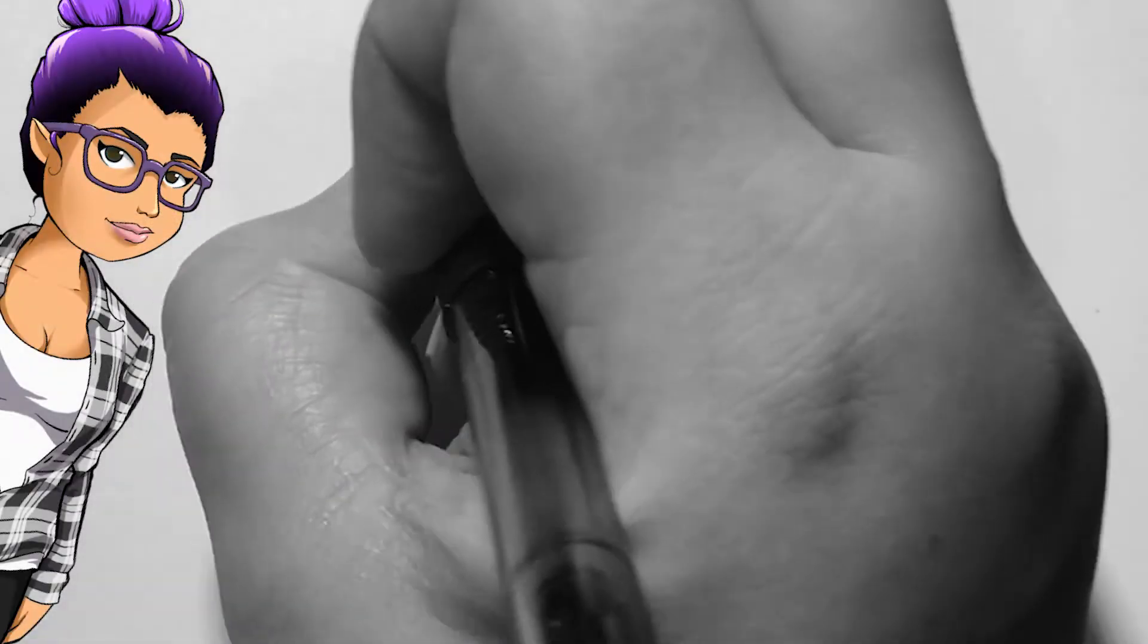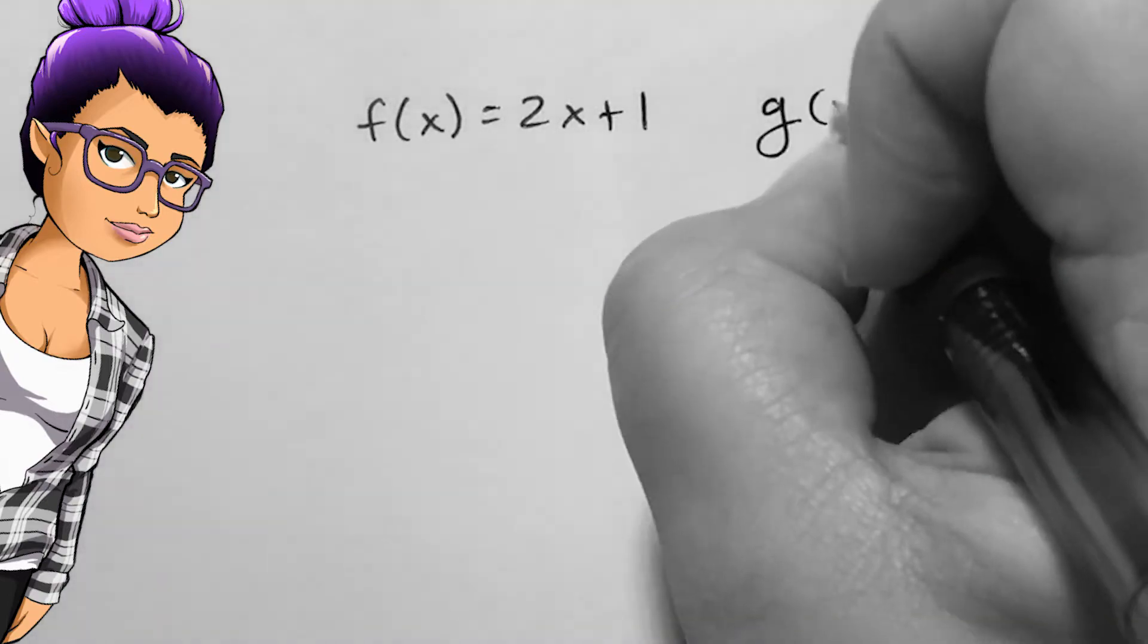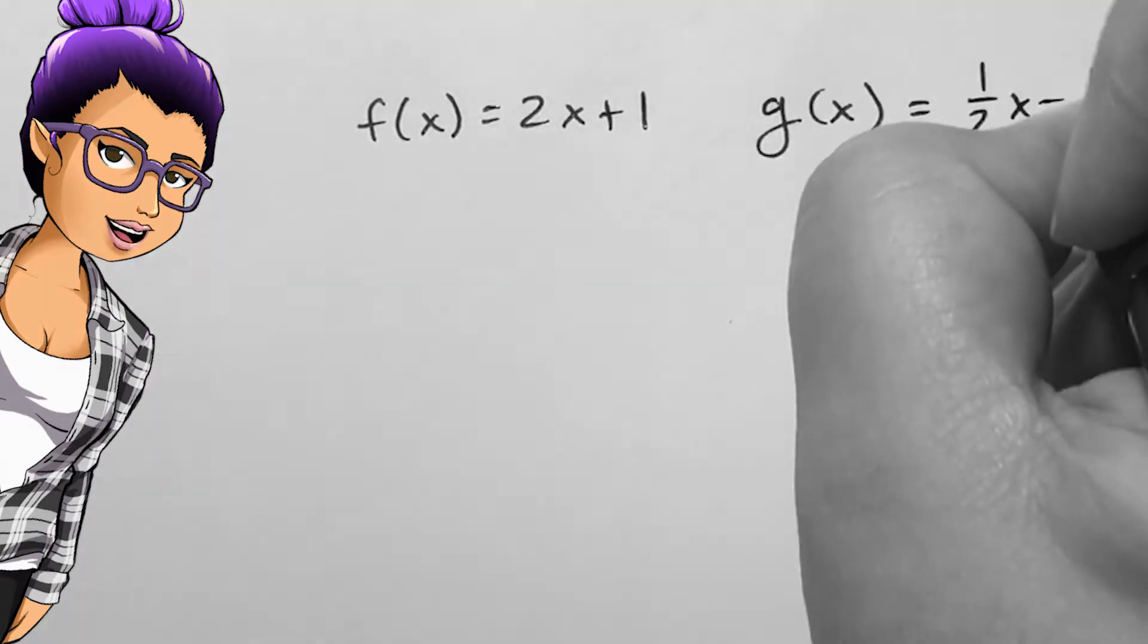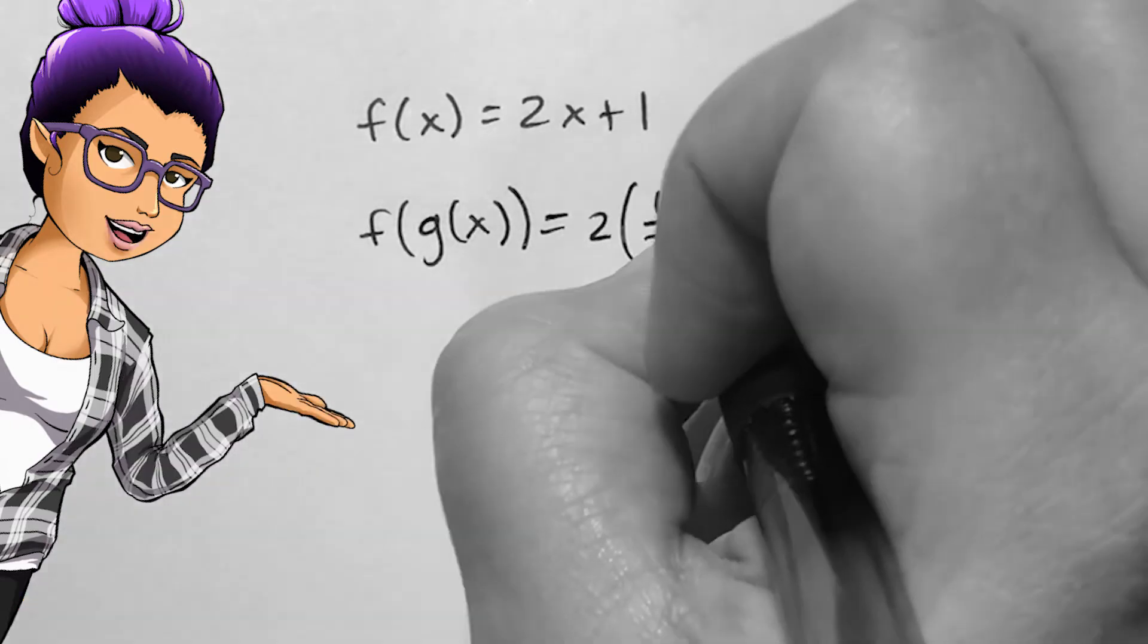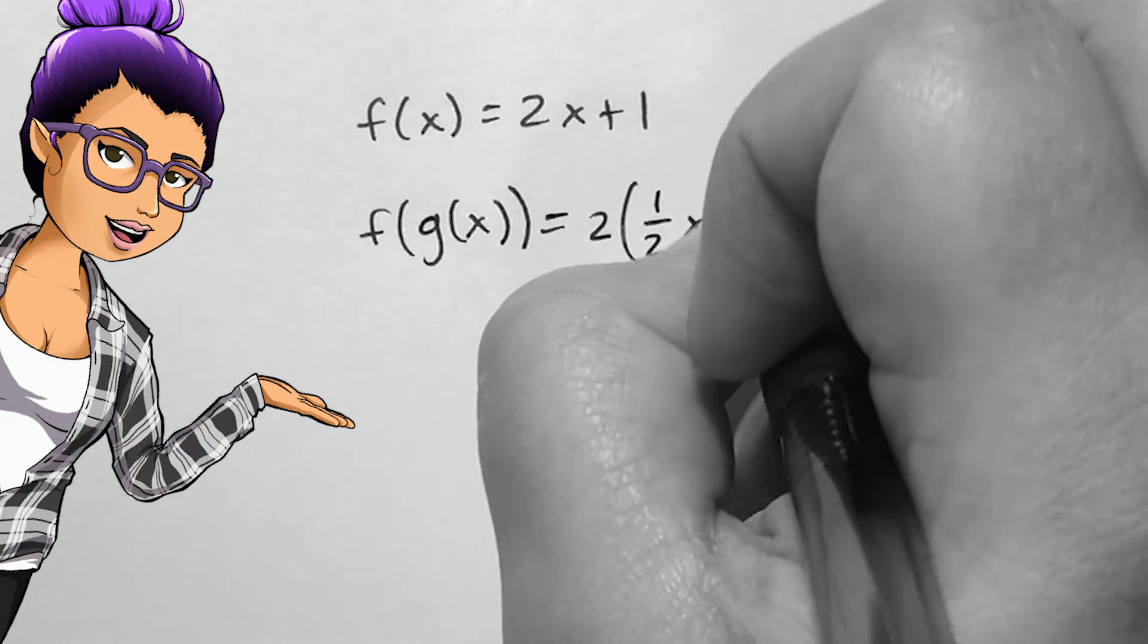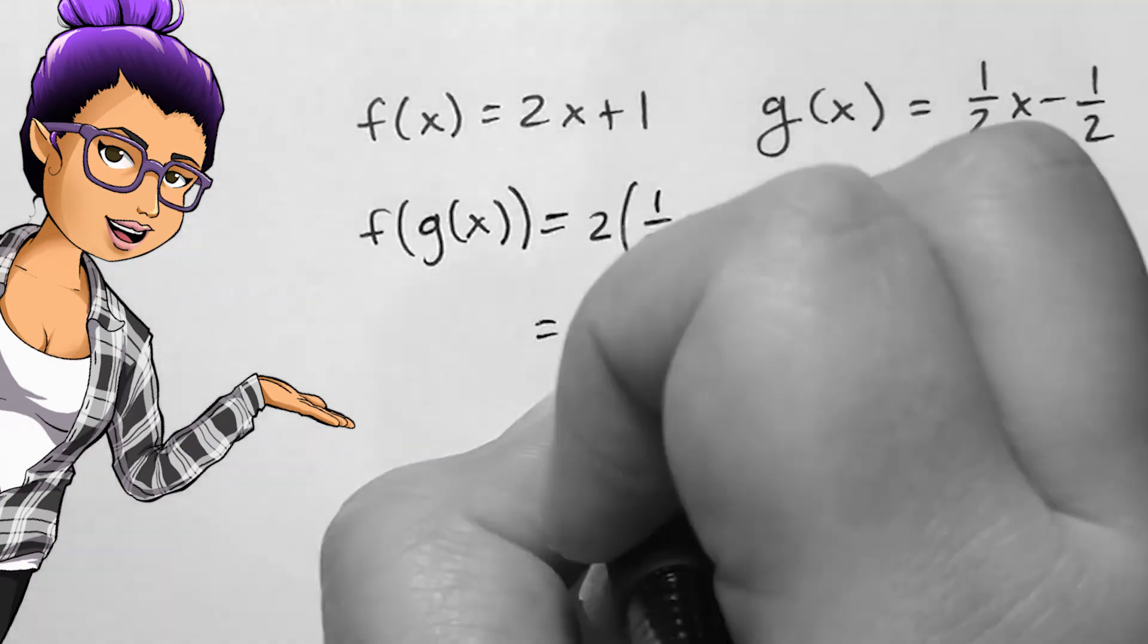Given the functions f of x equals 2x plus 1 and g of x equals 1 half x minus 1 half, we want to know if these are inverses of each other. We can find the two compositions f of g of x and g of f of x to see what happens.